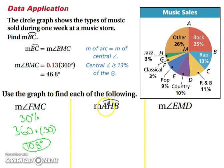How about the measure of arc AHB? Well, the measure of arc AHB is 75%, so 360 times 0.75 gives us 270 degrees.